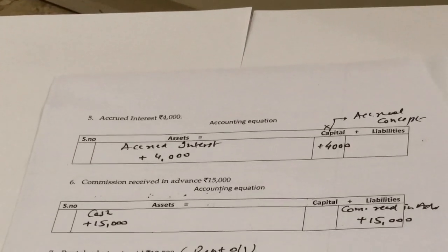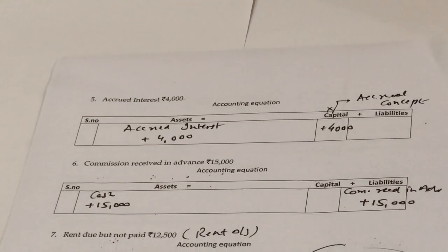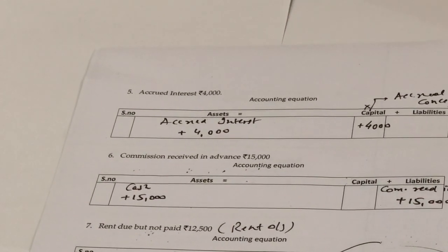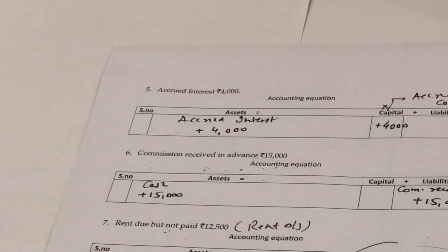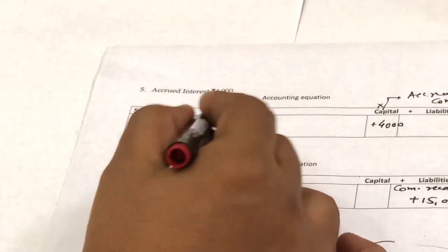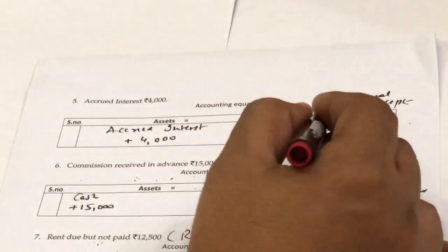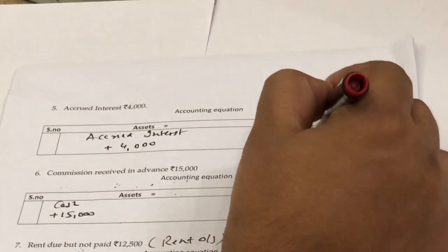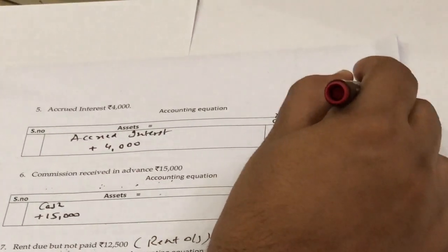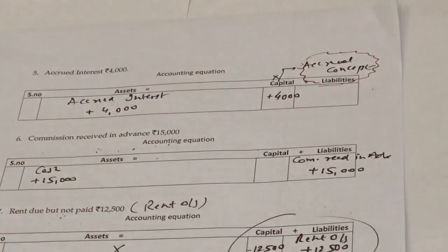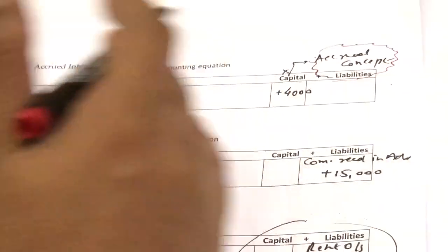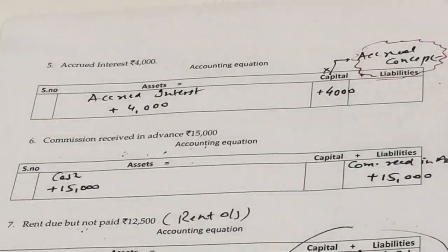Next transaction: accrued interest. Accrued interest means interest earned but not yet received. We open a separate column under assets for accrued interest and add it to capital, as per the accrual concept. Though the money is not yet received, it is income for the business because the service has been rendered.